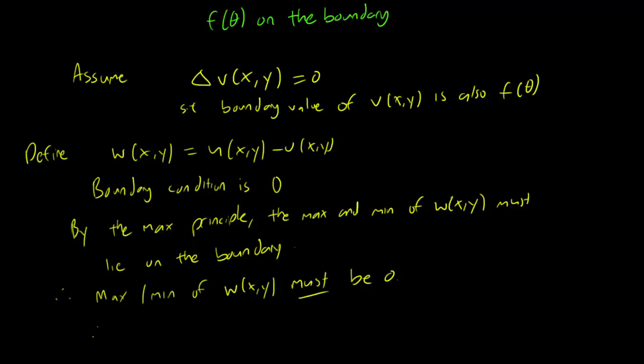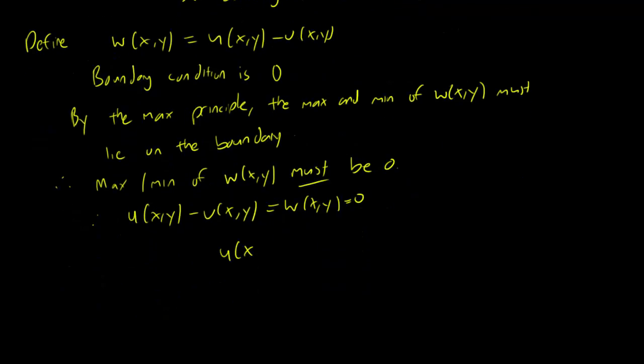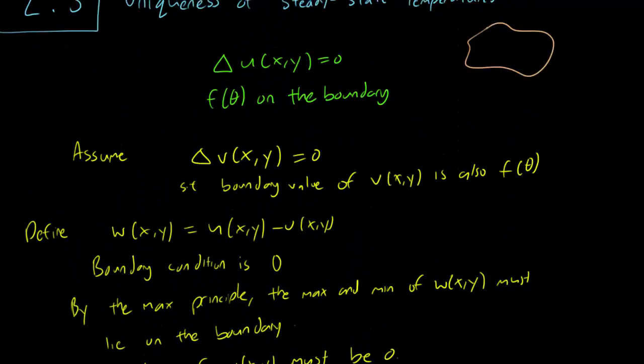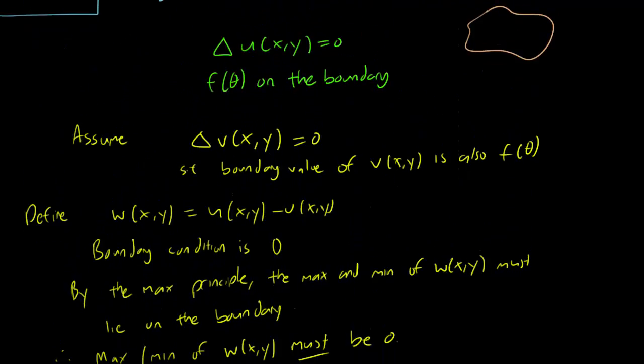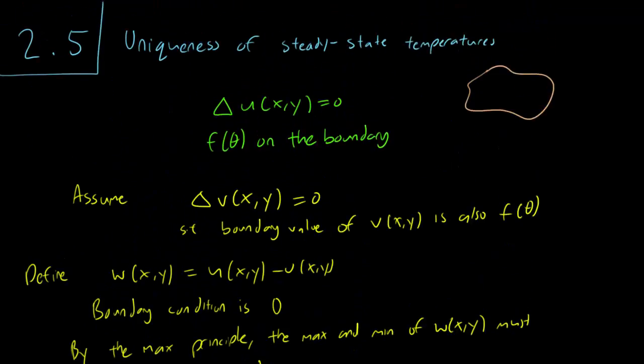This says that u(x,y) minus v(x,y) equals w(x,y) equals zero, which is of course the same thing as saying that u(x,y) is equal to v(x,y). And therefore, if two solutions of the Laplace equation have the same boundary values on the same surface, they must be equal. There is only one solution given each boundary condition.